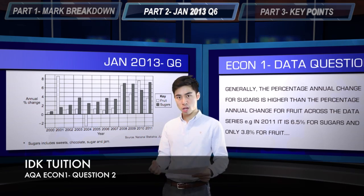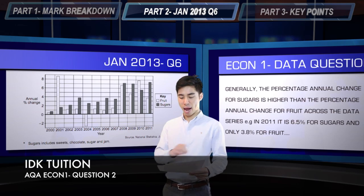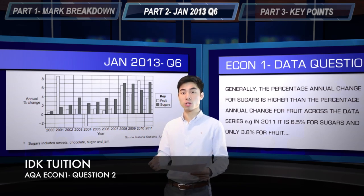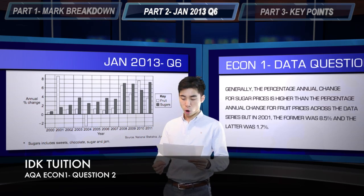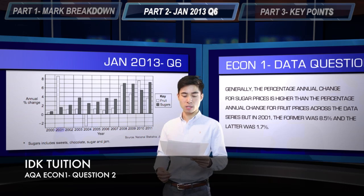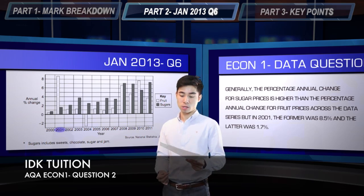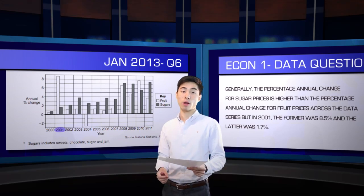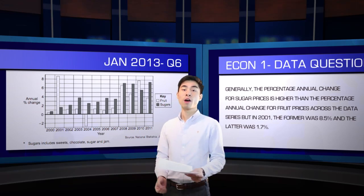Alternatively, you could simply state that generally speaking the percentage increase for sugars is greater than the percentage increase in fruit, and then pick out exceptions to this. One notable exception is 2001, where the percentage increase in fruit is massive at 8.5%, whereas the percentage increase in sugar is lagging behind significantly at only 1.7%. And that covers all your different types of points of comparison.